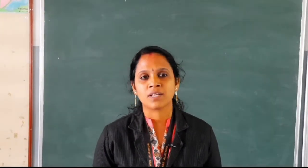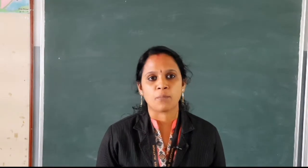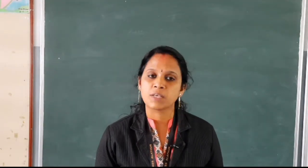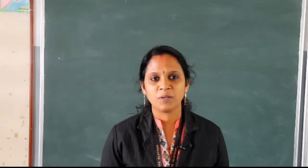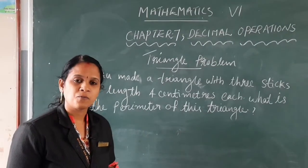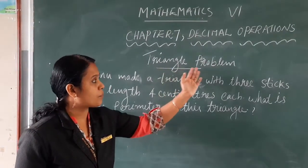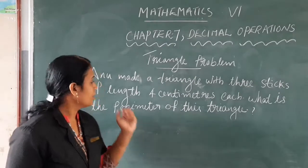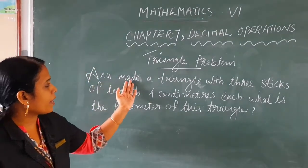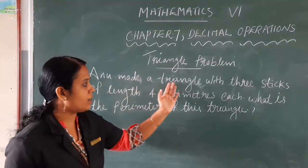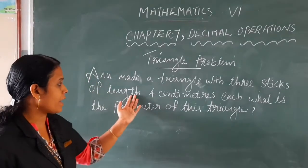Okay, dear children, let's move to our new chapter: Decimal Operations. Here the first topic is a triangle problem. The question is: you made a triangle with three sticks of length four centimetres each. What is the perimeter of this triangle?